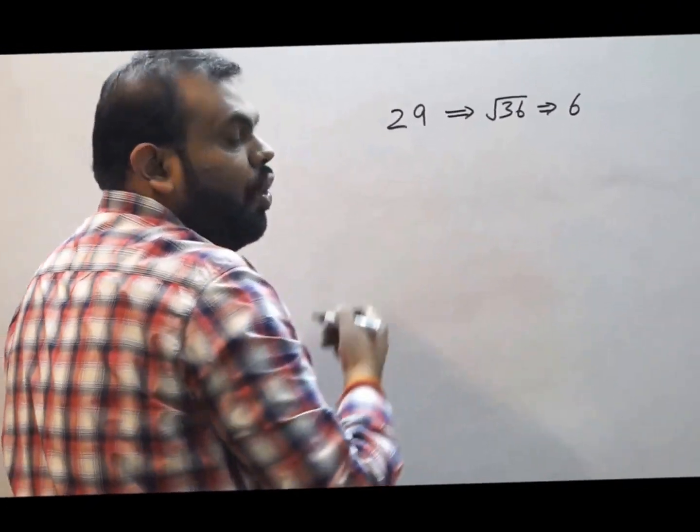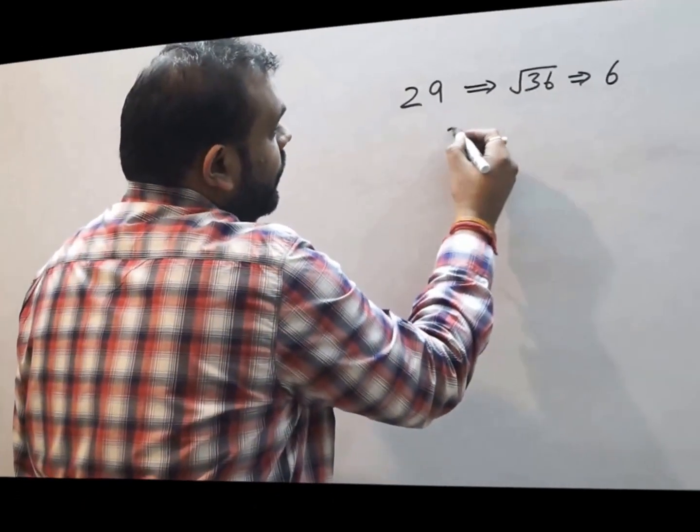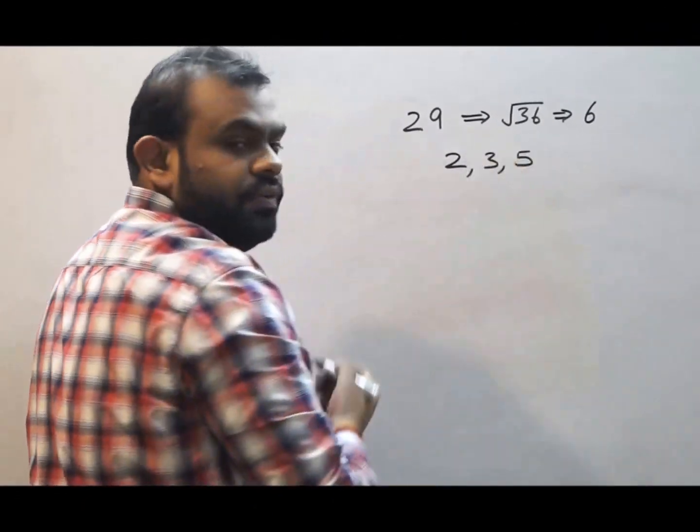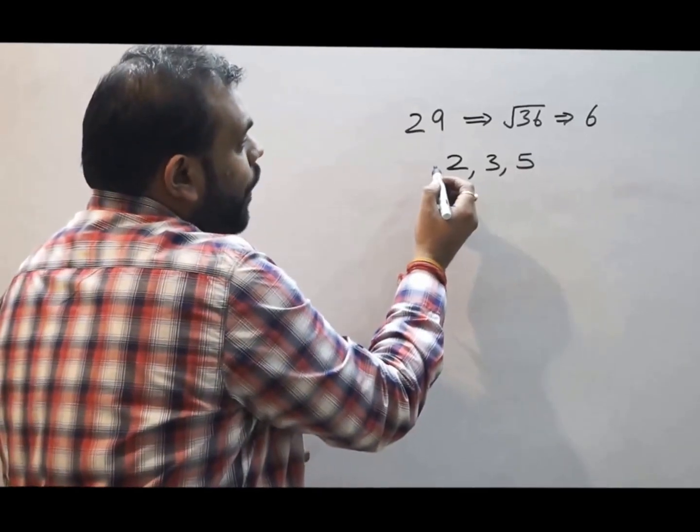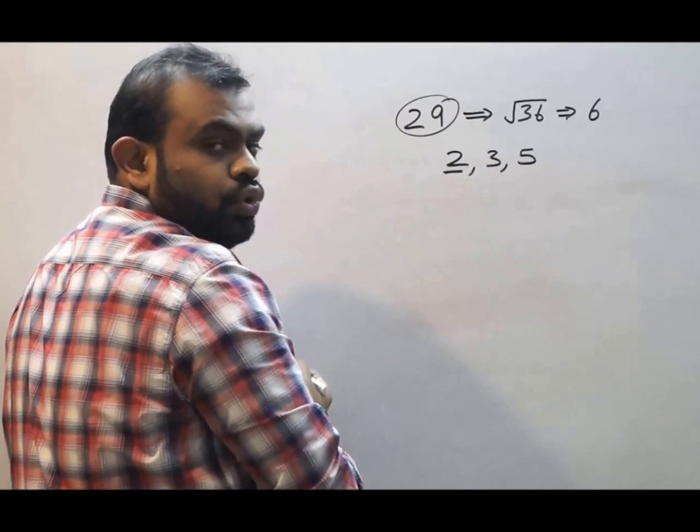Now write down all the prime numbers up till 6. That is 2, 3 and 5. Now one by one check whether 29 is divisible by 2, 3 or 5.